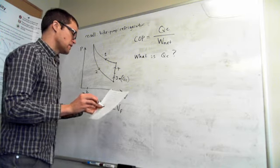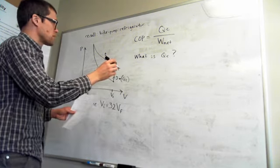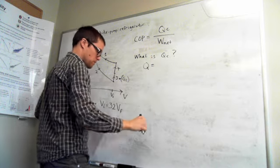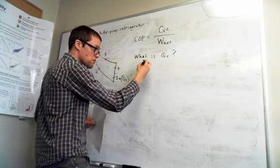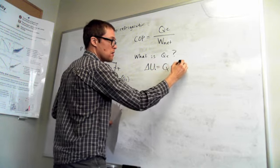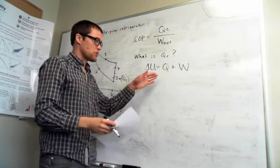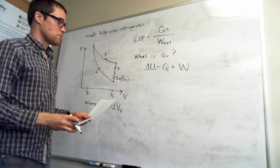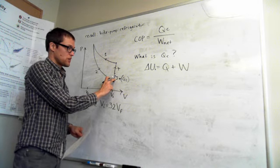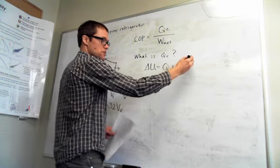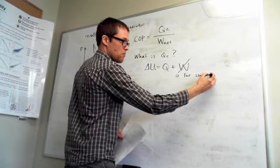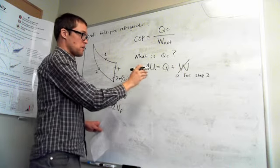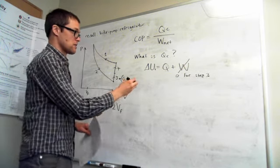The heat added in step 3 comes from the first law of thermodynamics. In step 3 there are no volume changes and no other work done, so the work term is zero — but only for step 3; steps 1 and 2 have volume changes. Therefore for step 3 only, Q equals ΔU.